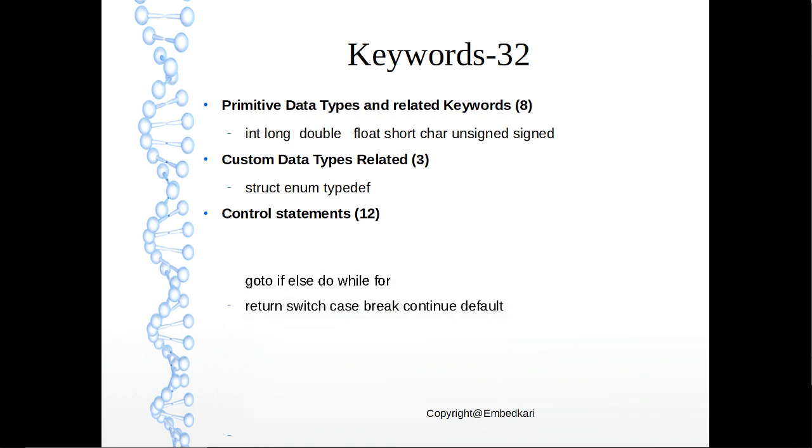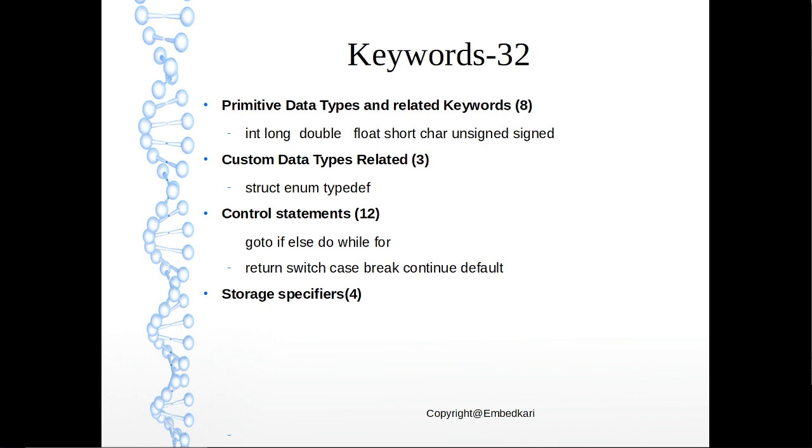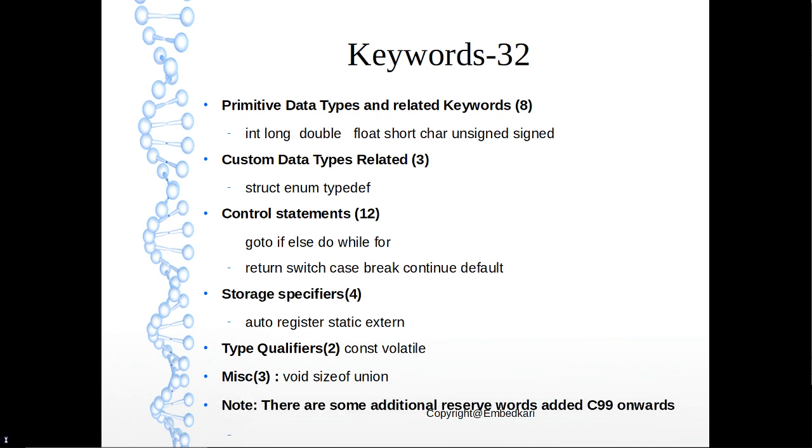And there are 12 control statements, like goto, if, else, do, while, for, return, switch, case, break, continue, default. These are the control statements which will change the flow of statement execution. Storage specifiers are auto, register, static, extern. And type qualifiers are const and volatile. Miscellaneous are void, sizeof, union. So these all form the keywords. Instead of writing all 32 keywords together, I just grouped them differently based on their uses for better understanding. There are some additional reserved words added C99 onwards.